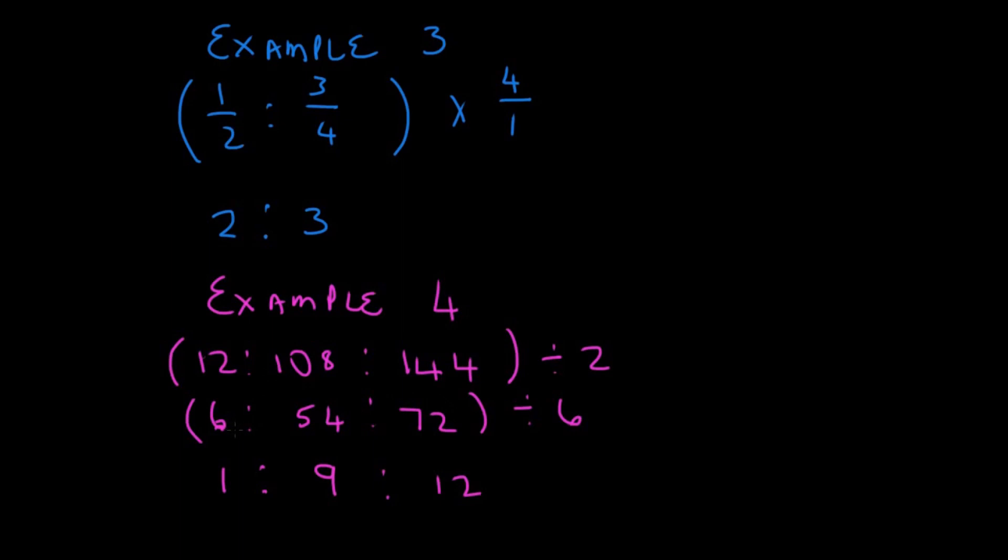So, we need to simplify as far as we can. And we are going to divide by 6 again. And we have got 1 as to 9 as to 12. This cannot be simplified anymore. And that is our solution.